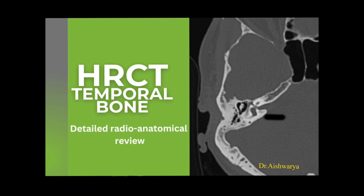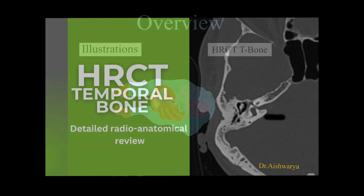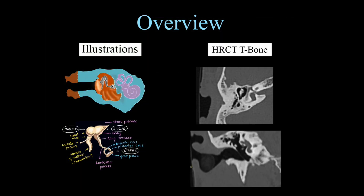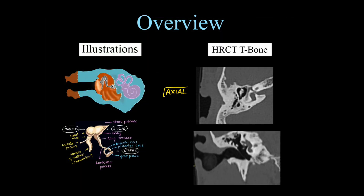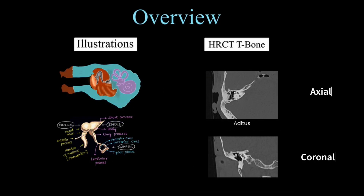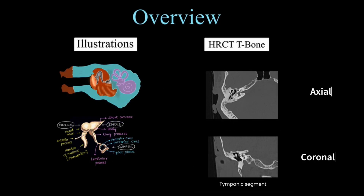We will be seeing anatomical illustrations and scrolled CT images. Section by section we will see how the structures look on axial and coronal CT, also on gross anatomical sections.